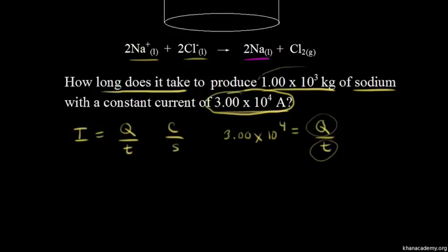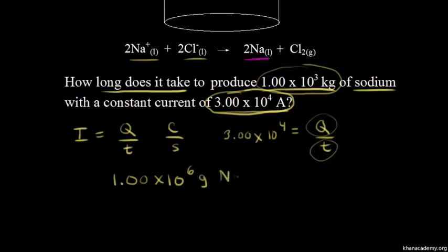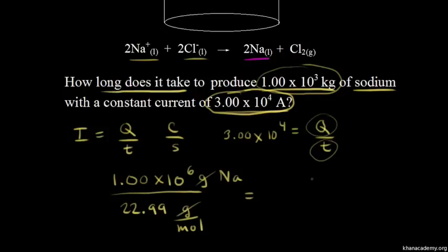Let's find the charge, starting with the mass of sodium: 1.00×10³ kilograms, which is 1.00×10⁶ grams. Next, we find the moles of sodium by dividing by the molar mass of sodium, which is 22.99 g/mol. The grams cancel out, giving us moles of sodium. So 1.00×10⁶ ÷ 22.99 = 4.35×10⁴ moles of sodium.